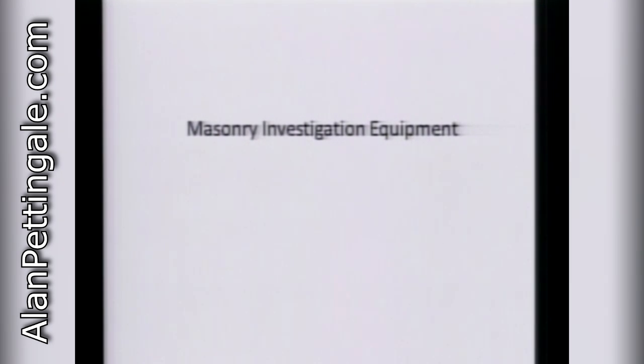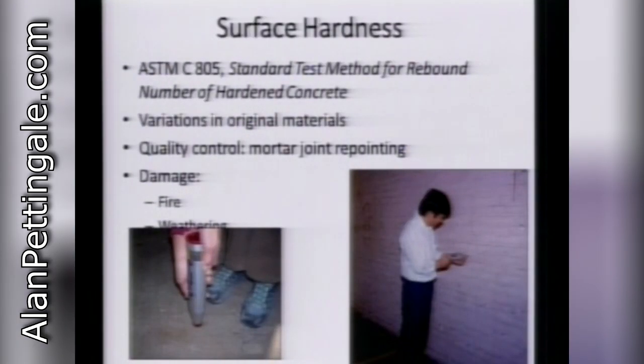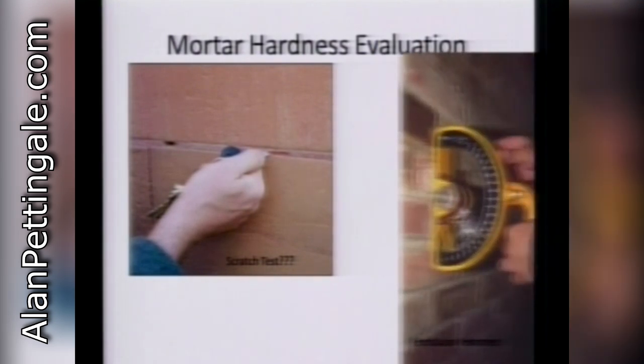I'm going to go through a series of slides on masonry investigation equipment — Mike Shuler, who deals with much more sophisticated equipment than I do on a regular basis, will talk more about this after lunch. This is an overview of techniques you can use in an investigation. You can use visual evaluation, scraping and hitting masonry. There's a surface hardness rebound hammer for standardized testing to compare soft spots to hard spots, plus mortar hardness evaluation with different standardized tests.